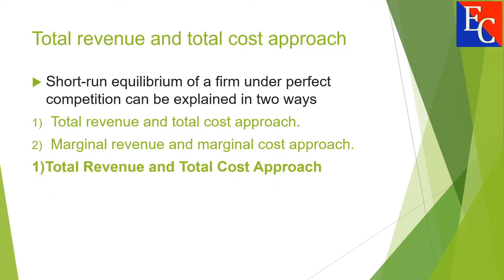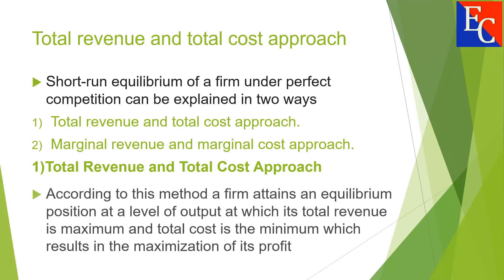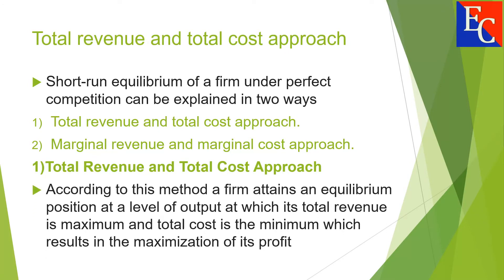According to the Total Revenue and Total Cost Approach, a firm attains an equilibrium position at a level of output at which its total revenue is maximum and total cost is minimum, which results in the maximization of its profit.